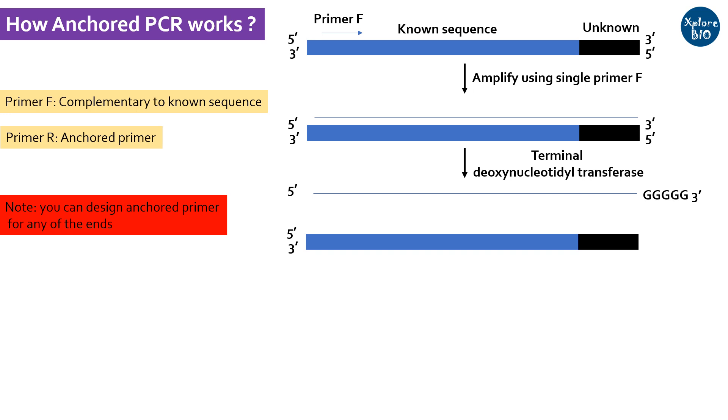So now you have created a known DNA sequence near the unknown region by the method called homopolymer tailing. This would now act as the primer binding site for our second primer, which is called the anchored primer.